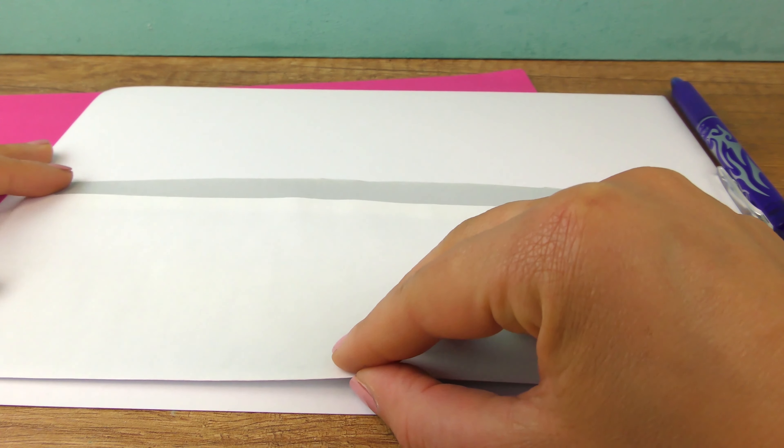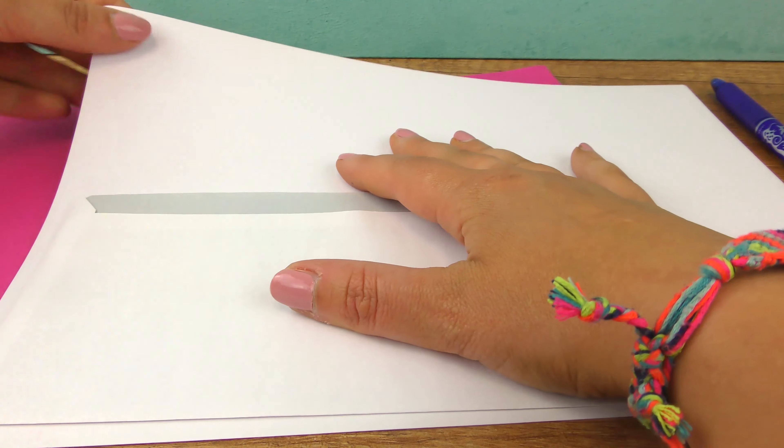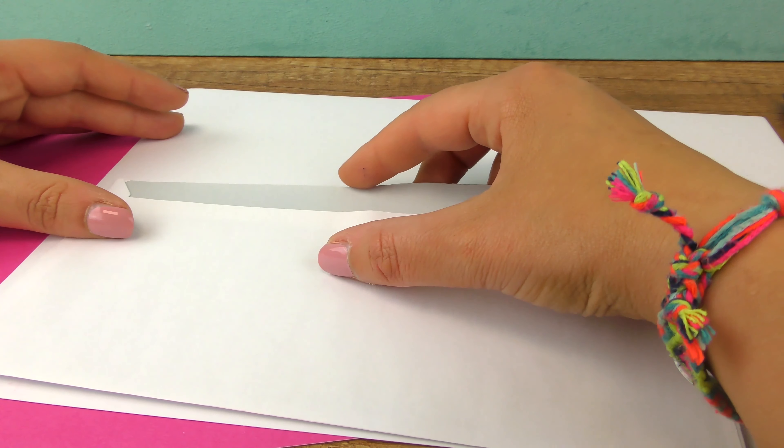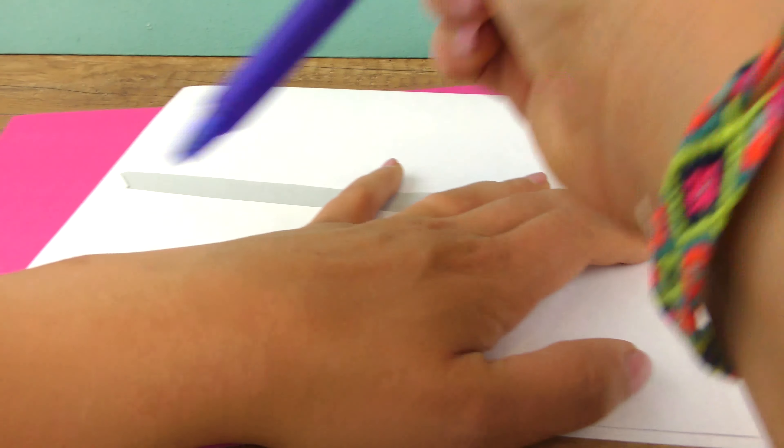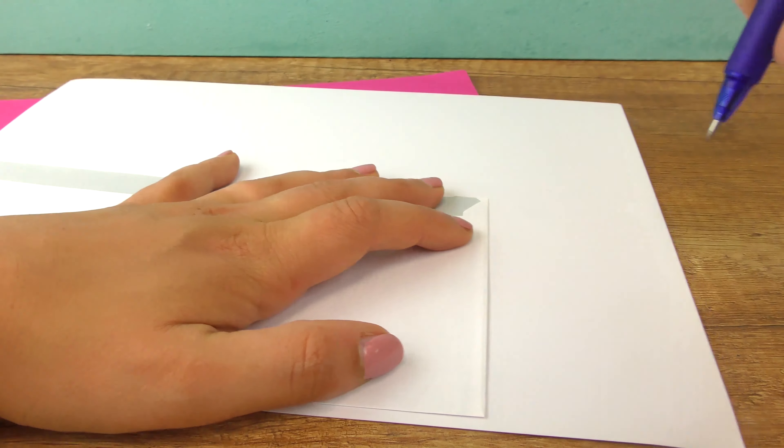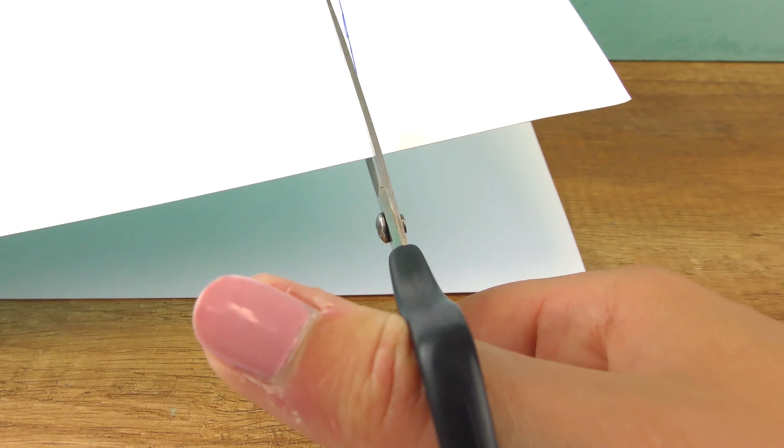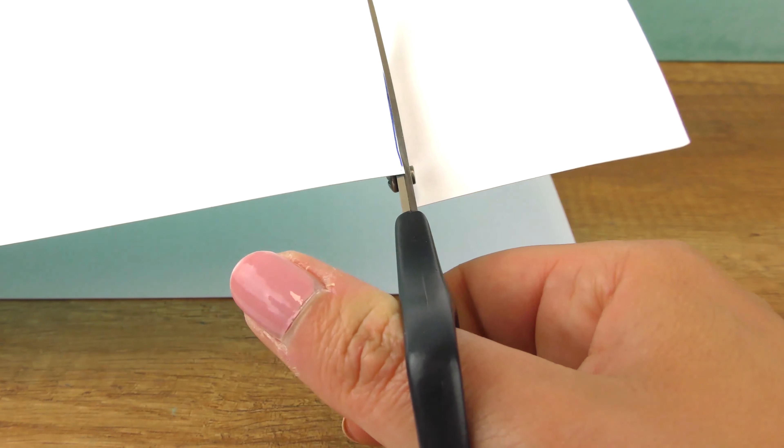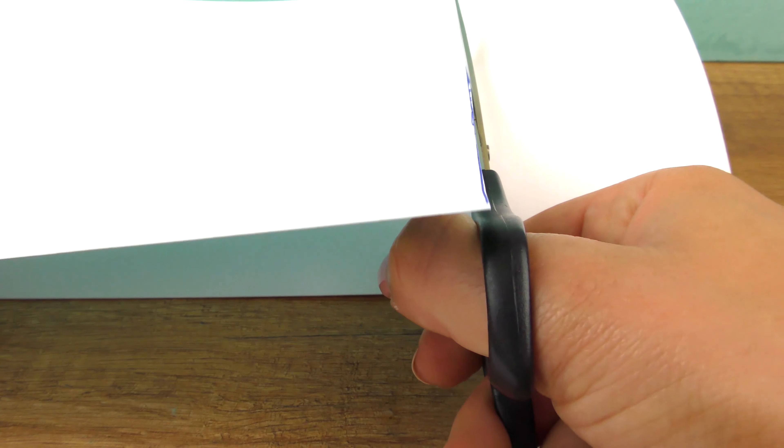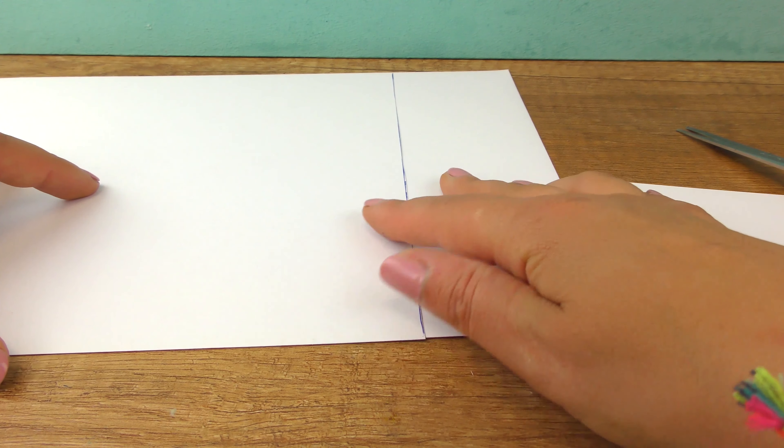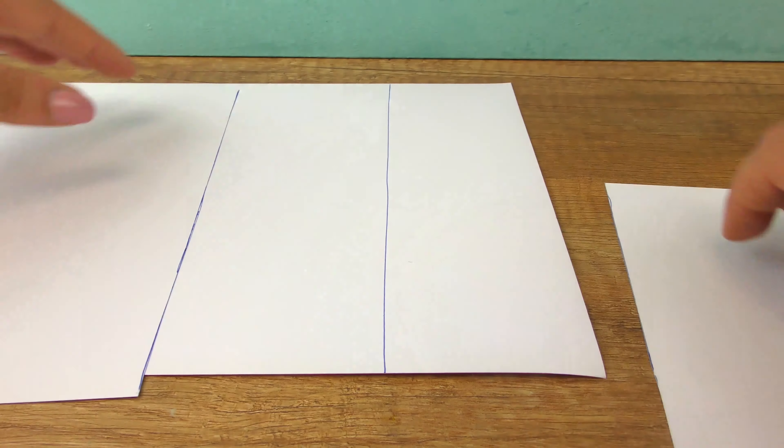This side is a bit longer so it won't fit that way, so I'll do it the other way around. Cut out. We need one pink one too.